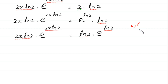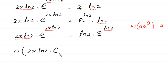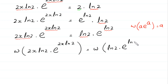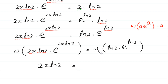We apply the Lambert W function to both sides. W of 2x times ln 2 times e to the power (2x times ln 2) gives 2x times ln 2 on the left. W of ln 2 times e to the power ln 2 gives ln 2 on the right. So 2x times ln 2 equals ln 2.